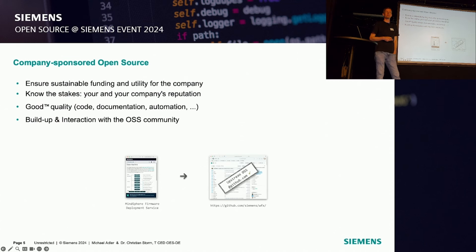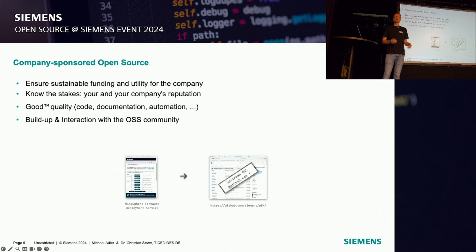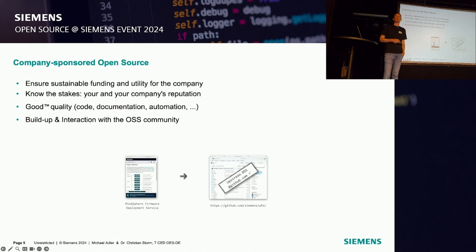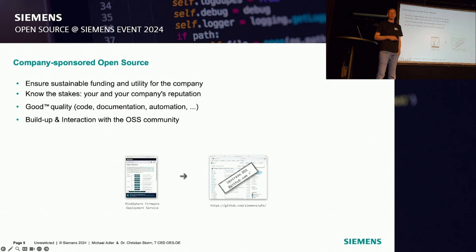If you have a company-sponsored open source project, there's a bit more involved. If it's company-sponsored, you have to have sustainable funding. If you put something out and it gets cancelled thereafter, that's not really good. As it's company-sponsored, it has to have some utility for the company that should last over whatever time period you have. As you open it under the flag of your employer, you have to know the stakes — there is a bit of reputation involved, yours as well as the company's. And good quality is a must if you do it in the open source way. The last thing is community involvement — we already had some issues, discussions, and a few contributions.